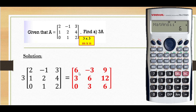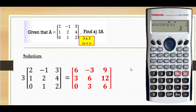The result of 3 times matrix A: 1,1 is 6; 1,2 is negative 3; 1,3 is 9. Then 2,1 is 3; 2,2 is 6; 2,3 is 12. Then 3,1 is 0; 3,2 is 3; and the last one, 3,3 is 6.